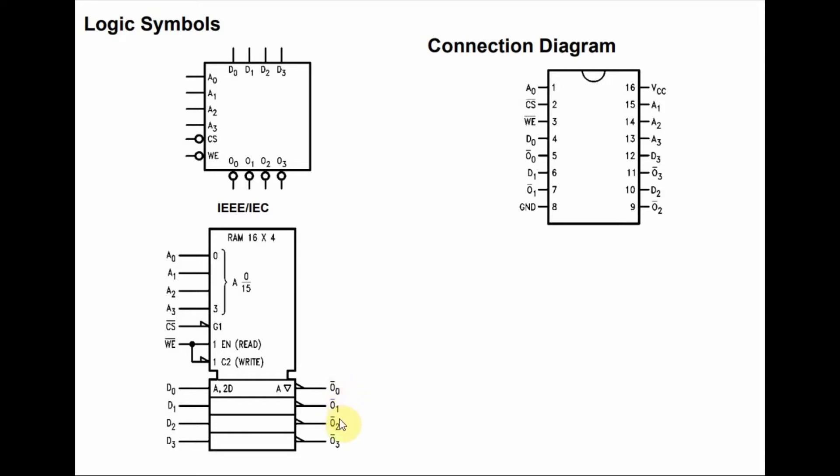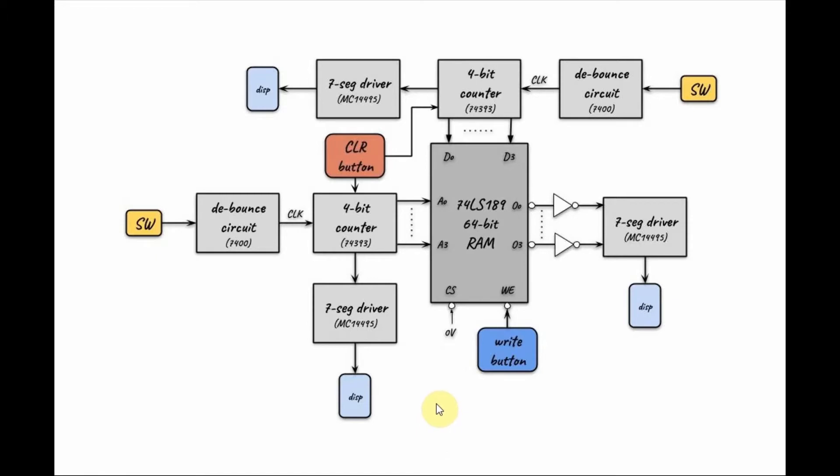A block diagram of the RAM programmer is shown here. The heart of the system is the 74LS189, the 64-bit RAM to be programmed. It has four input data lines, four input address lines, four output data lines, and two control lines.